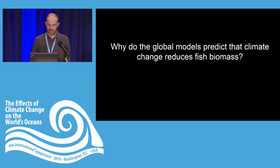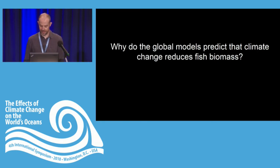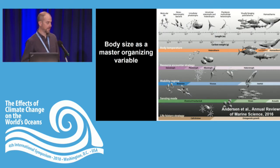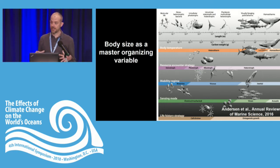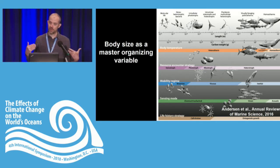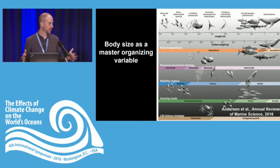Why is it that these models are predicting reductions in fish biomass over the 21st century under warming? And is that correct? I'm going to talk about an approach common among many of the global models, which is using body size as a master trait. The idea is that body size determines many features of marine organisms — there's a beautiful review by Ken Anderson from a couple of years ago. You can use this as an organizing structure and follow the flow of energy through size-structured organisms in the marine ecosystem.